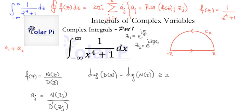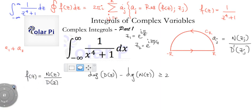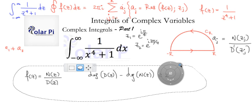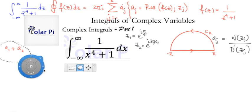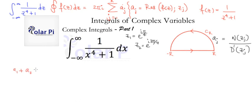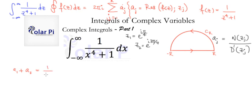We're going to use this formula to calculate the residues. So a₁ plus a₂ is going to equal — notice that N(z)/D′(z) gives 1 over 4z cubed — so we'll have 1 over 4 times z₁ cubed plus 1 over 4 times z₂ cubed. I can factor out a one-fourth, giving 1/4 times (1/z₁³ + 1/z₂³).